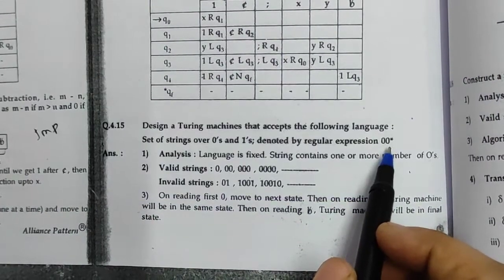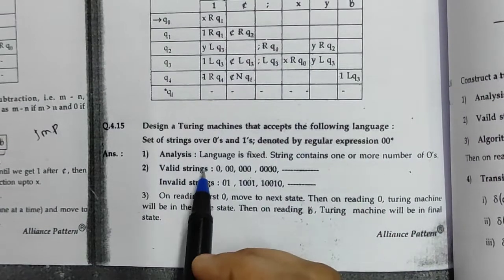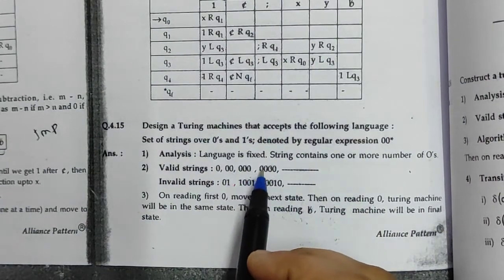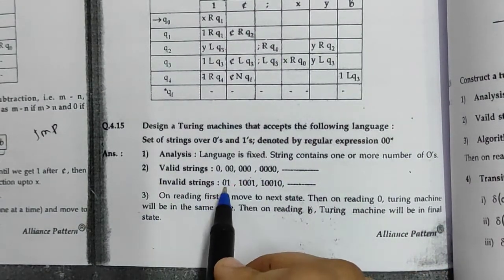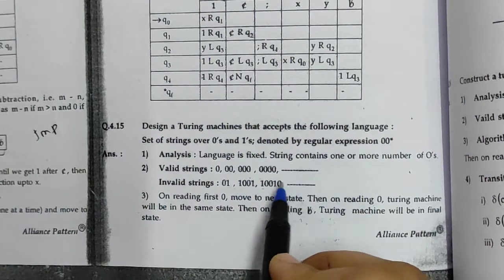The valid strings will be 0, 00, 000, and so on. Invalid strings will be 01, 101, 110, and so on.